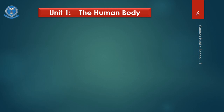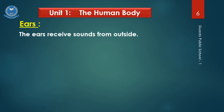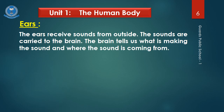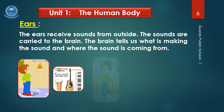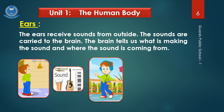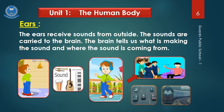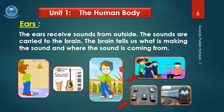Now come to the next sense organ, which is ears. The ears receive sound from outside. The sounds are carried to the brain, and the brain tells us what is making the sound and where the sound is coming from. We can hear different sounds through our ears — like loud sound, soft sound and melodious sound. We can recognize a person by his or her voice, and we can also recognize things by their sound. So ears help us to hear different sounds around us.